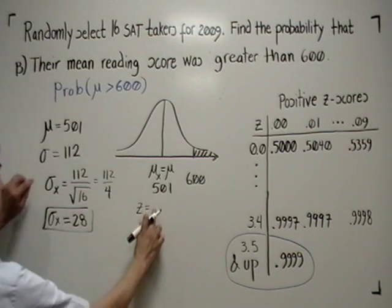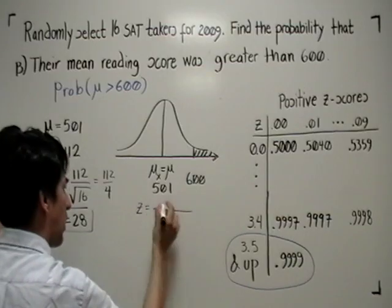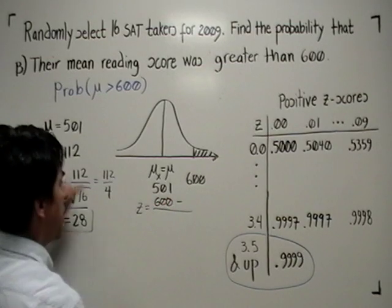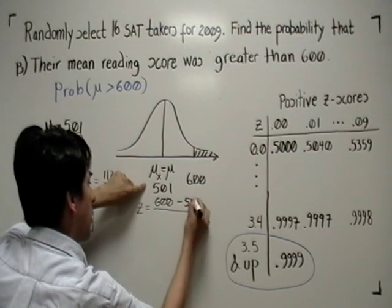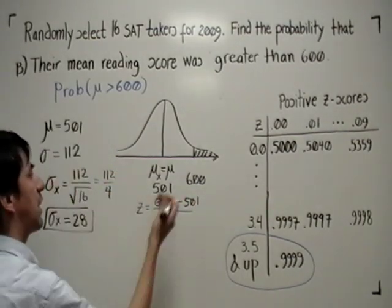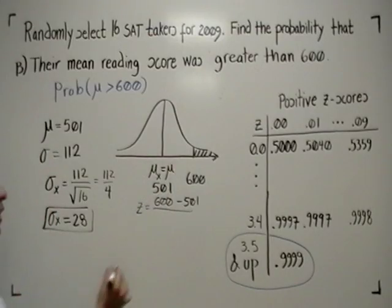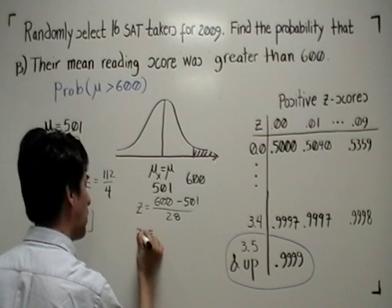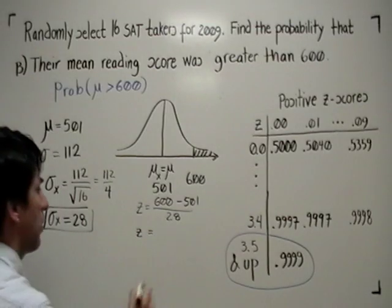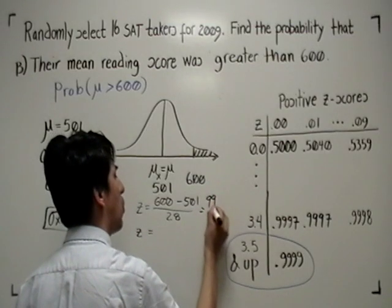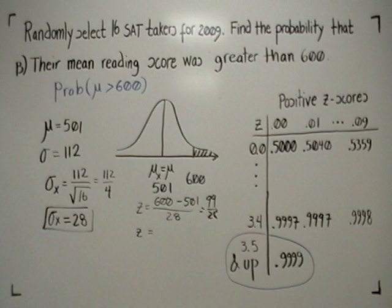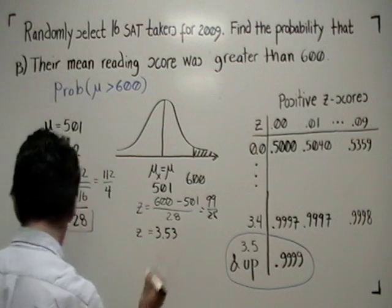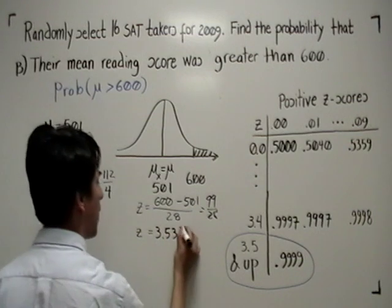So we convert our score in our distribution into a standardized distribution. So here is the standardized score for 600. Z equals 600 minus the mean of this distribution, our working distribution, over the standard deviation of our distribution, which we found to be 28. When we do the calculation in the calculator, first we get 99 over 28. The calculator gives us 3.53571, etc.